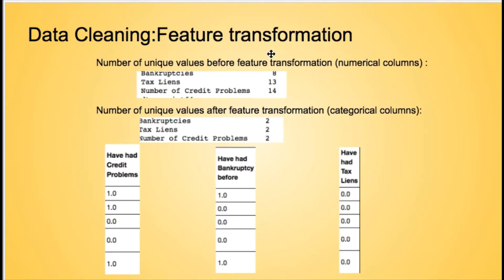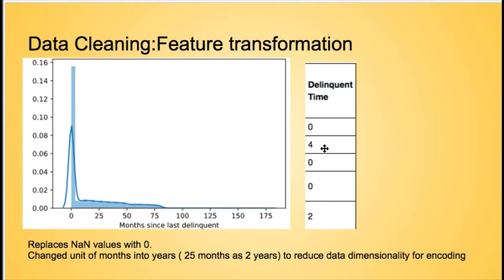For feature transformation, we transformed these continuous columns into categorical columns. Because there are too many unique values, it's better to transform them into categorical columns with larger than 0 as 1 and equal to 0 as 0 to reduce the dimensionality of the dataset. The next feature transformation is to shrink the units of months since last delinquent from months to years to also reduce the dimensionality for further label encoding.